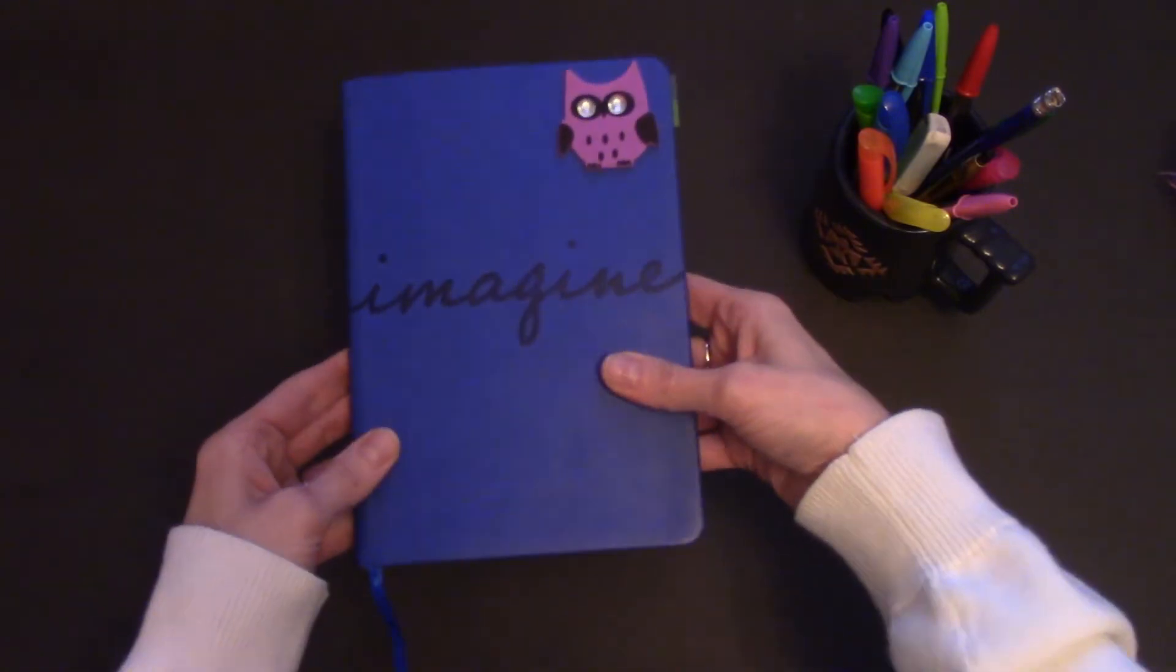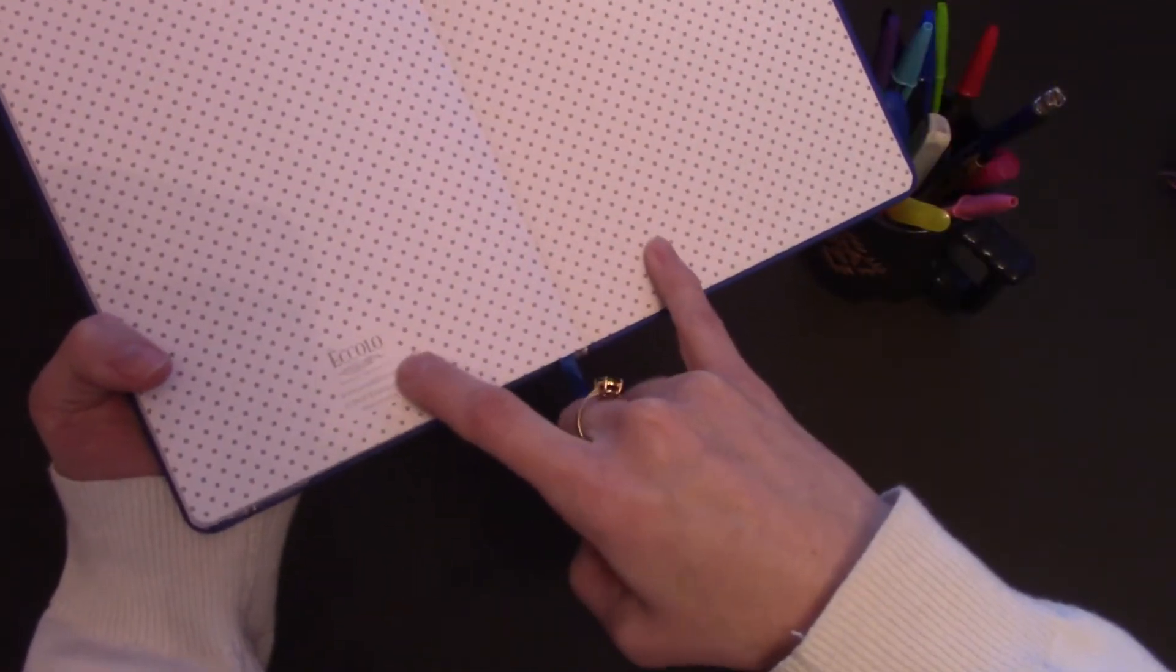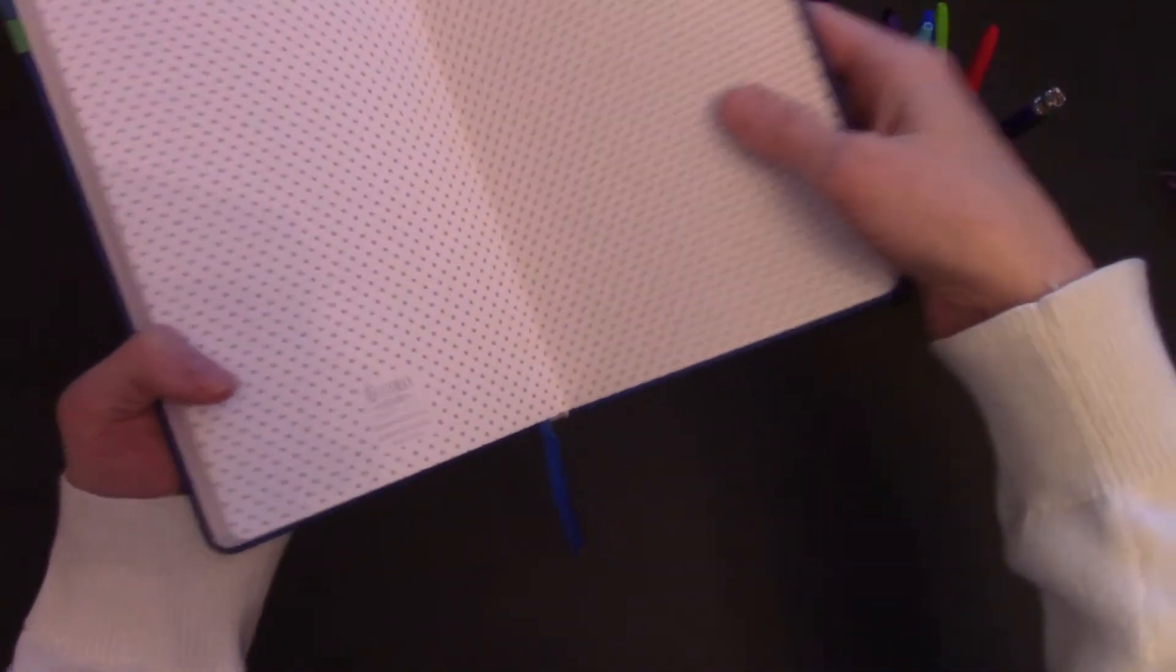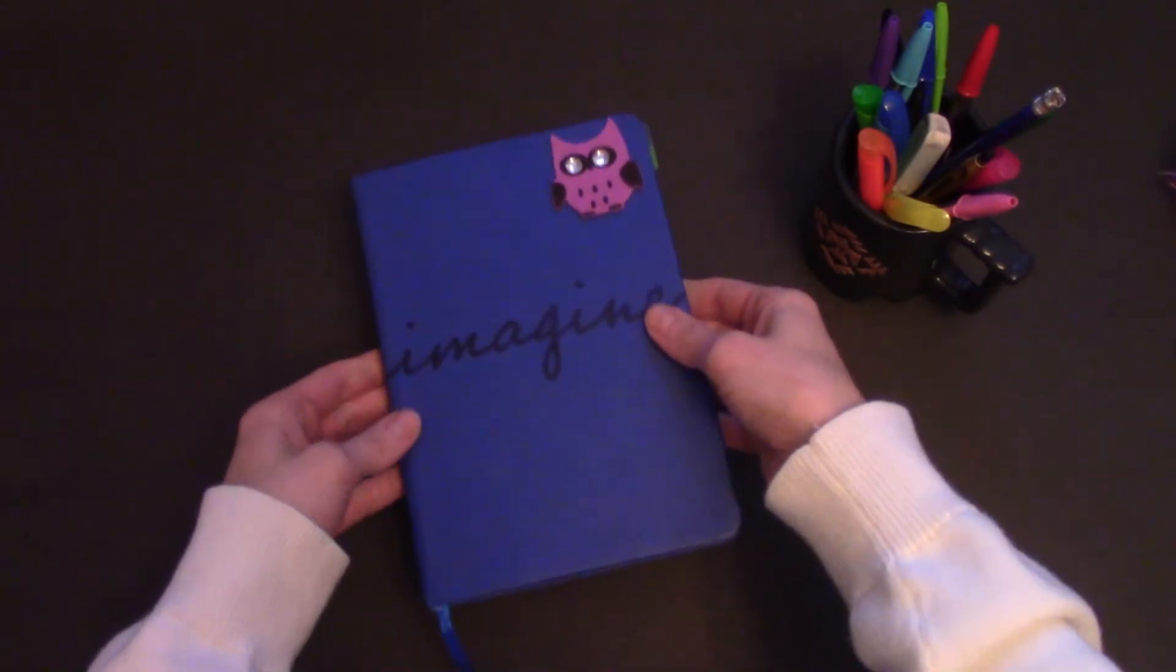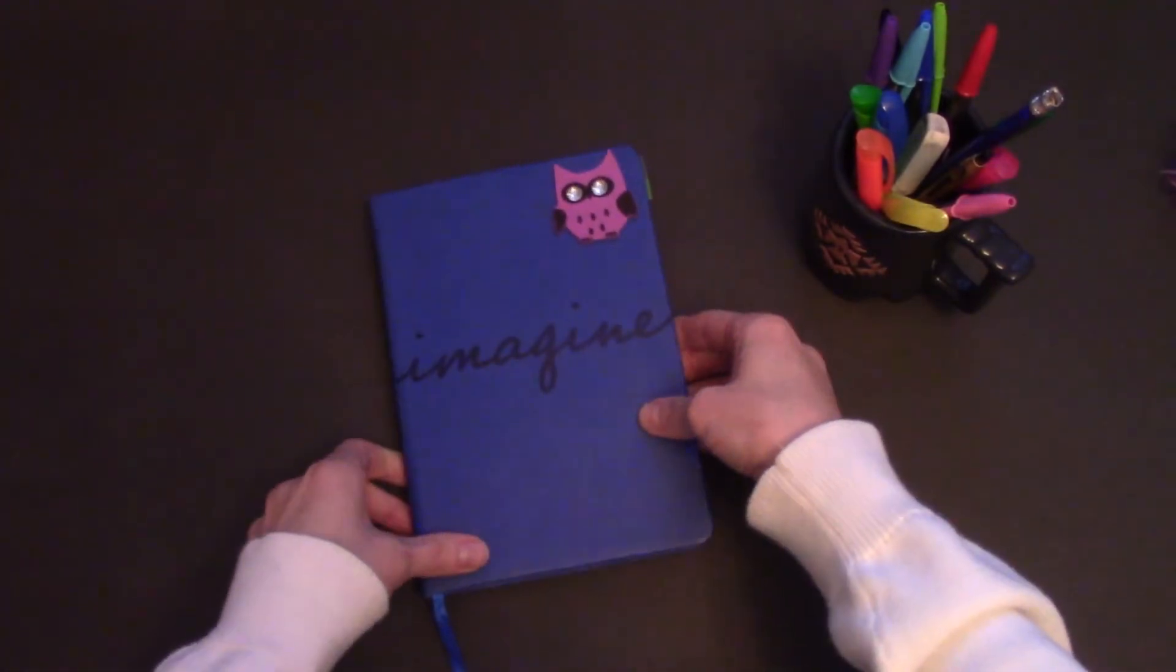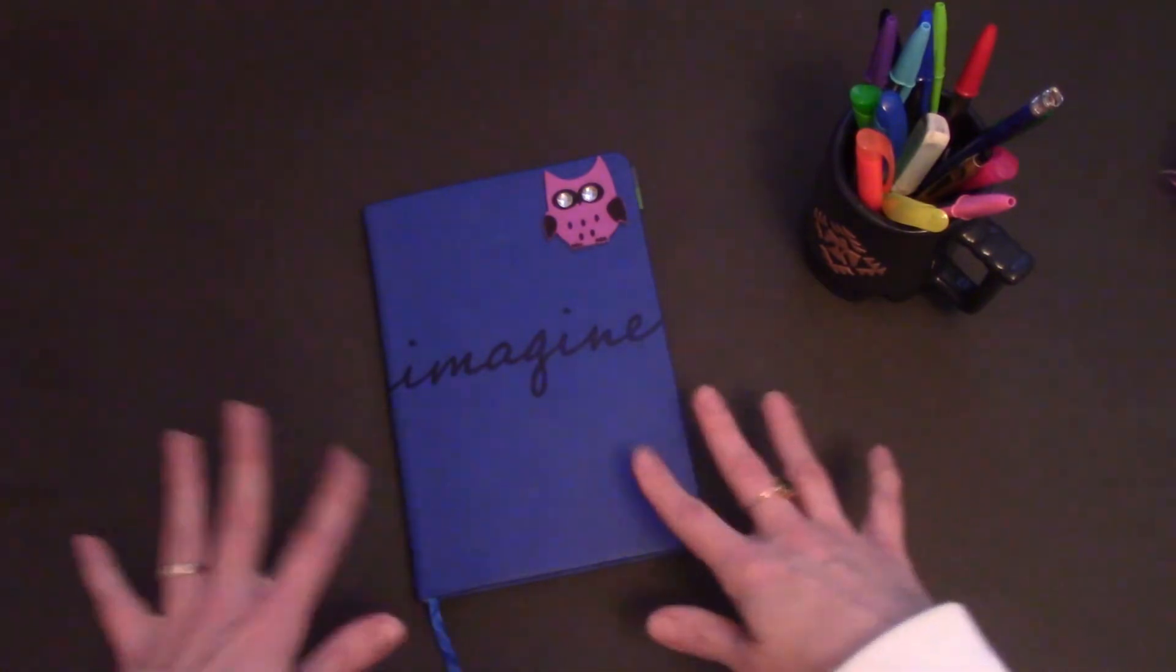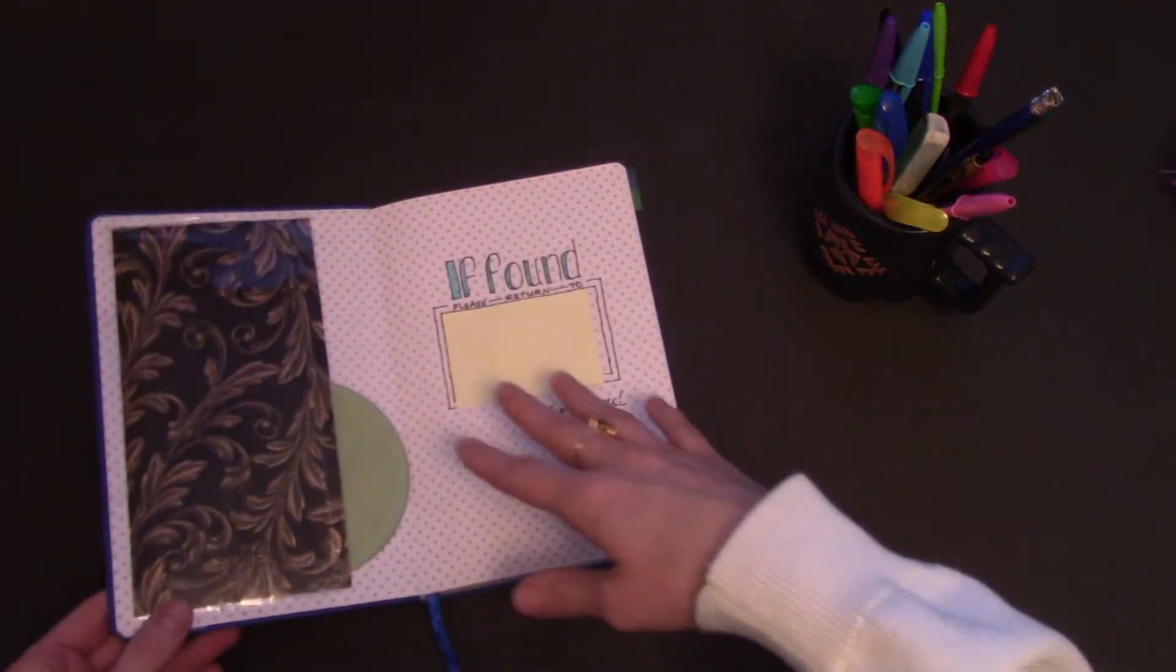This isn't really a bullet journal. It's actually just a regular journal by Ecolo. They have a website. I'll link to it down below so you can go look at all of the journals they have. Again, this came from my brother for my birthday two years ago actually and it was just perfect for my very first Bujo. So when we open it,